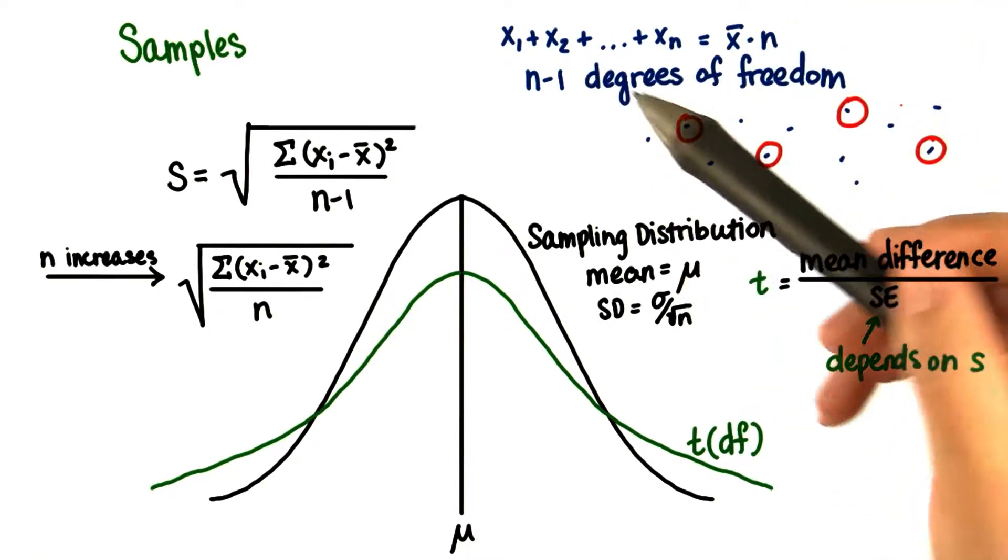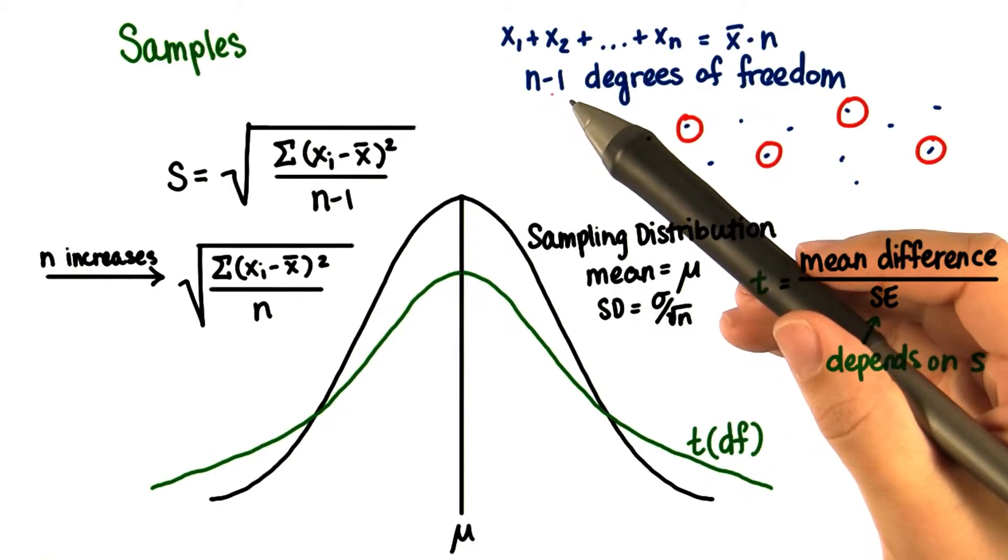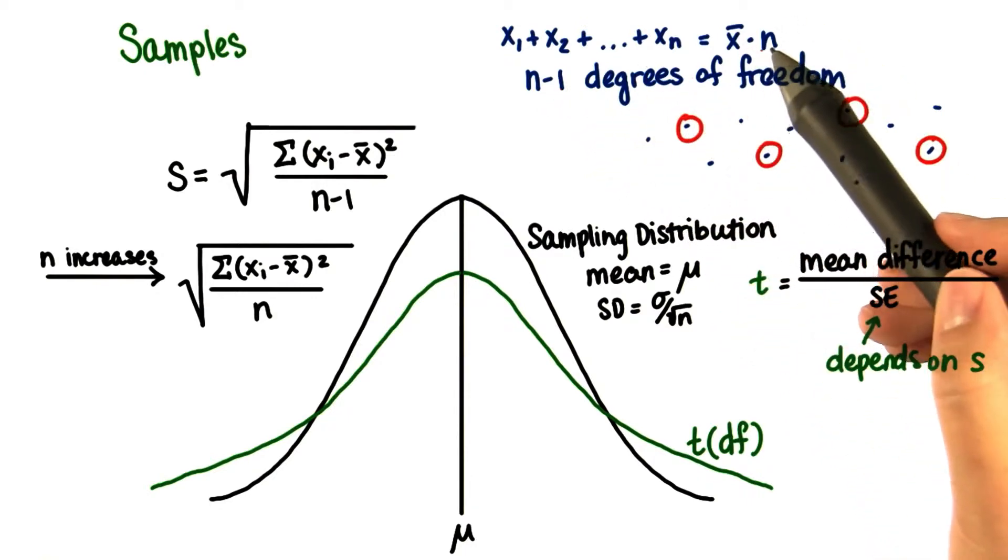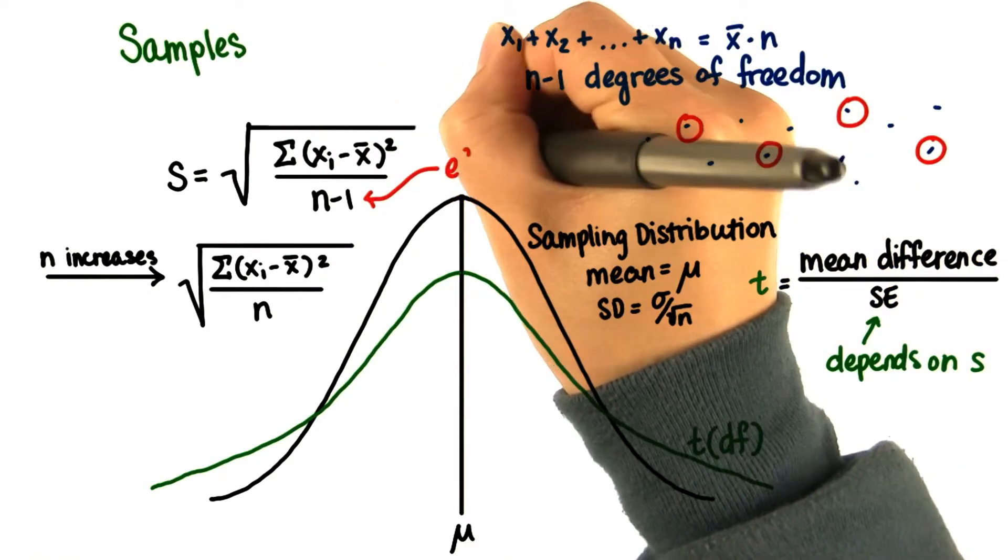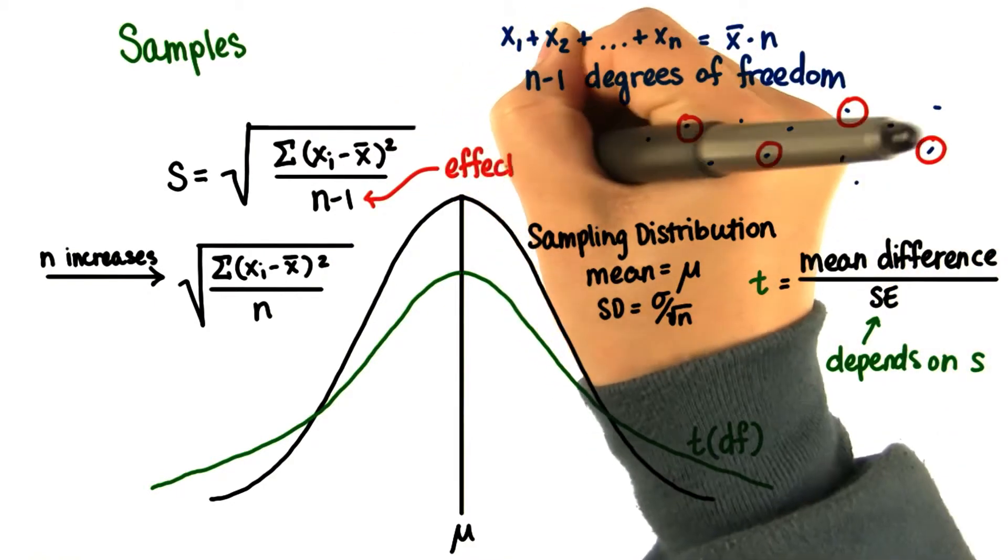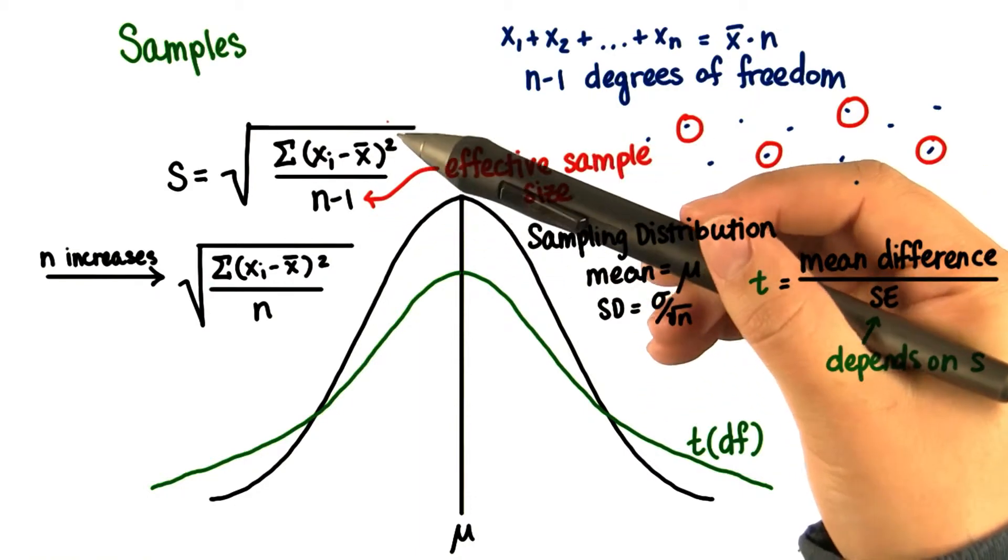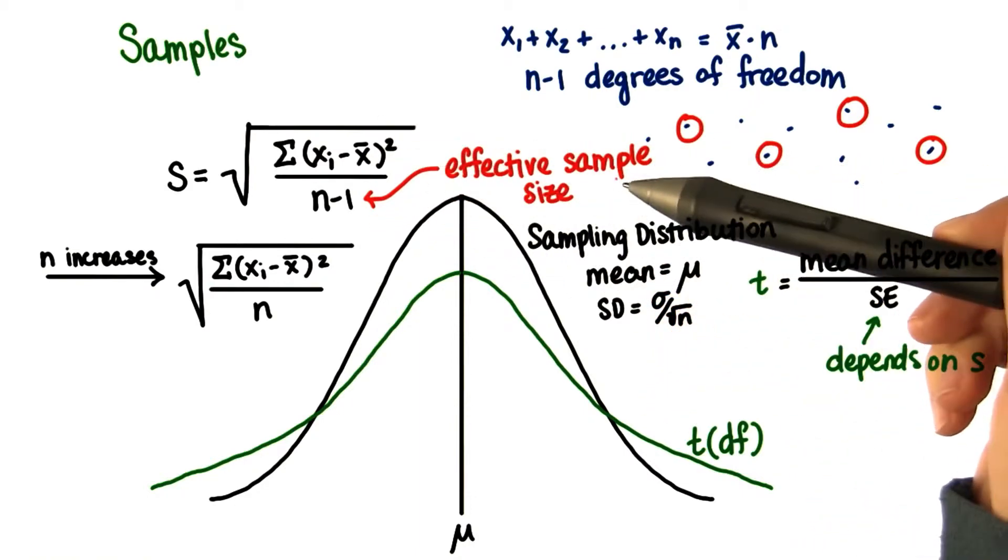In other words, n minus 1 of the values may vary as long as the nth value results in that same sum, to get the same average. n minus 1 is called the effective sample size. Since the sample standard deviation depends on x bar, there are n minus 1 degrees of freedom.